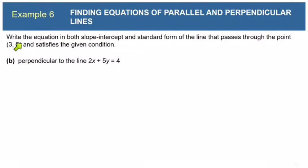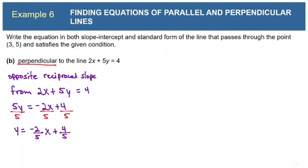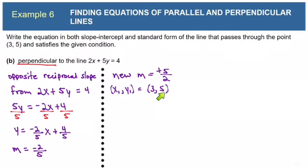In part B of example 6, we write the equation of a line through (3, 5) that is perpendicular to 2x plus 5y equals 4. For perpendicular lines, slopes must be opposite reciprocals. In part A, we found that line's slope was negative 2/5. So the slope of our new perpendicular line needs to be positive 5/2 — we change the sign and flip the number over. Our new line still passes through (3, 5).